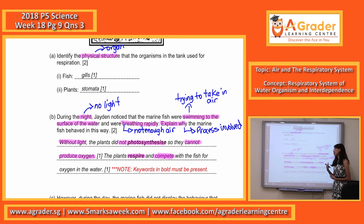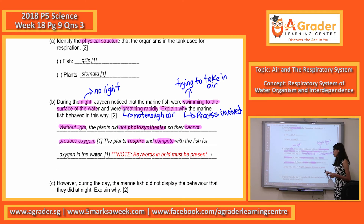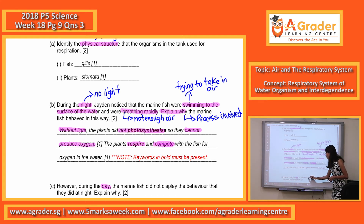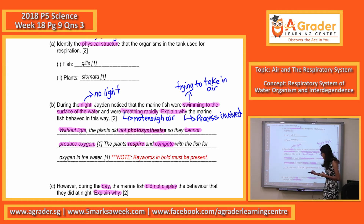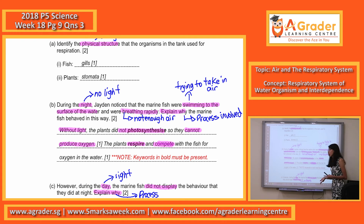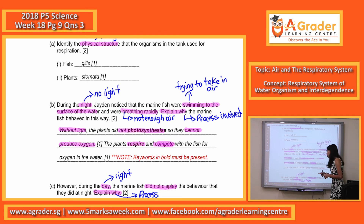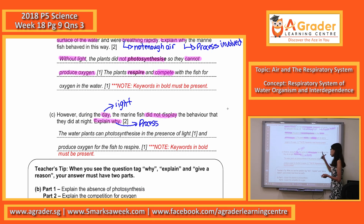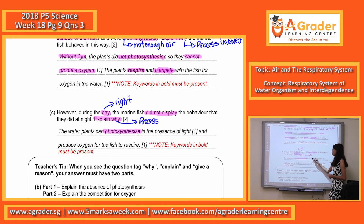Now let's look at part C. For part C, they say that during the day, the fish did not display such behavior as at night, and you have to explain why. Similarly, it's just the opposite of part B. In the day, mention that there is light. When there is light, explain in terms of processes involved — plants can photosynthesize. When plants photosynthesize, they actually take in carbon dioxide and give out oxygen. So when they give out oxygen, there is enough oxygen for the fish to respire. The key word is they will photosynthesize in the presence of light and produce oxygen for the fish.